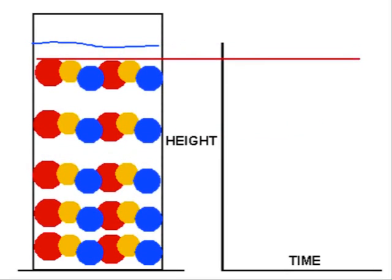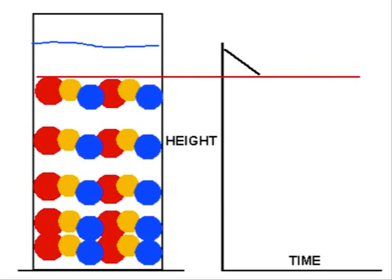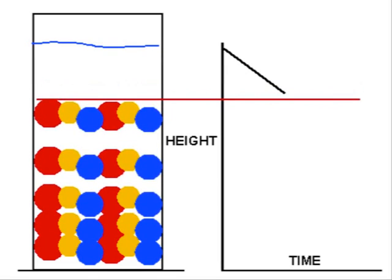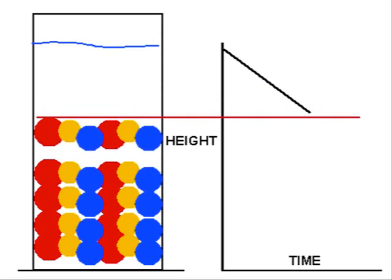So that's hindered settling, and that's the classic height-against-time plot, and it's the plot of the interface during hindered settling. We can get a lot of information from that plot by careful analysis.